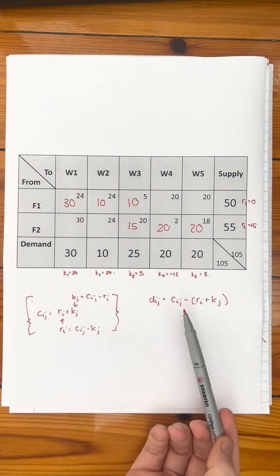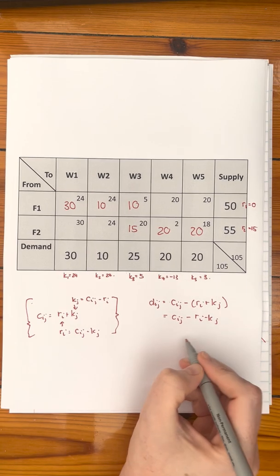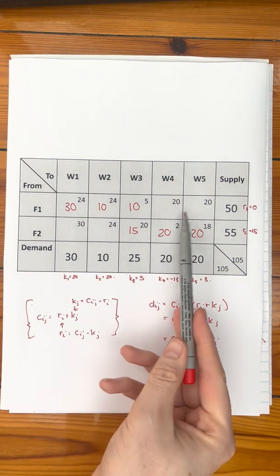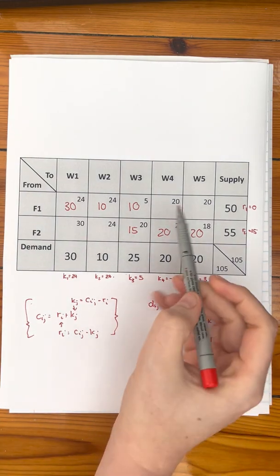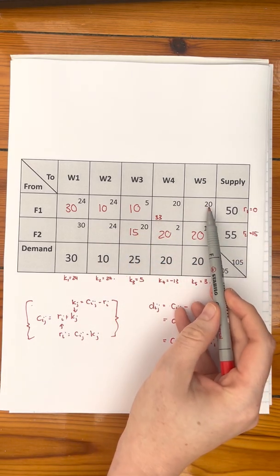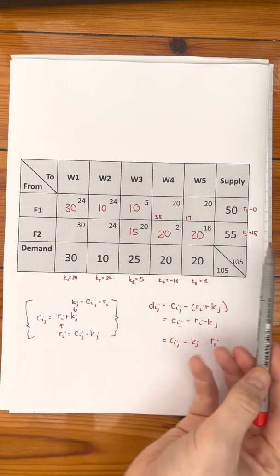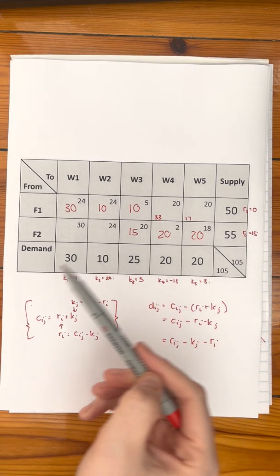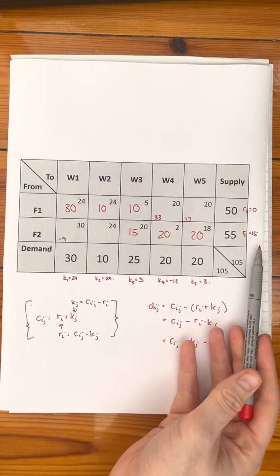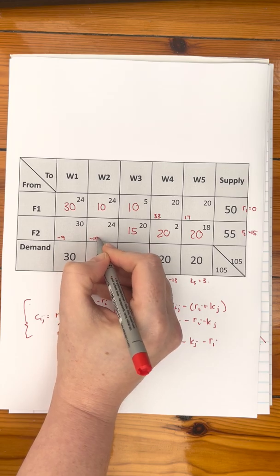We work out the difference for all the empty cells — the non-basic variables. So: for one cell, 20 minus 0 minus (minus 13) gives 33. Then 20 minus 0 minus 3 gives 17. Then 30 minus 15 minus 24 gives minus 9. Then 24 minus 15 minus 24: doing 24 minus 24 gives 0, then minus 15 gives minus 15. And we've computed all our differences.